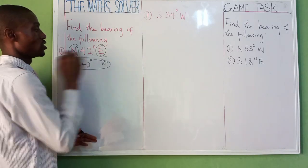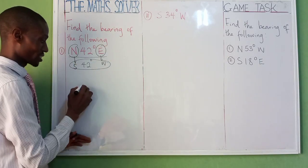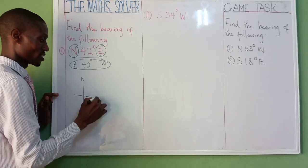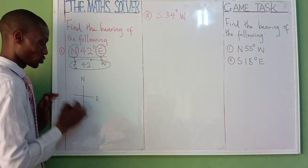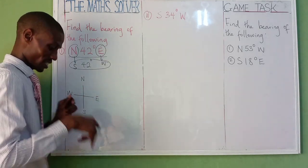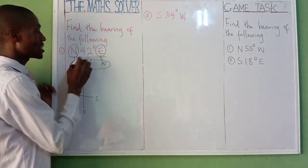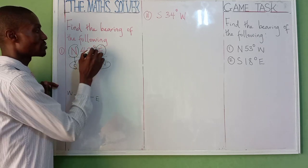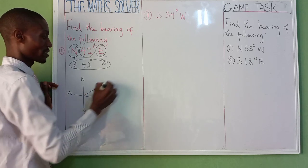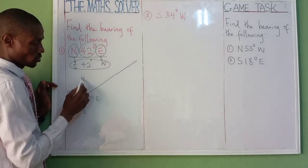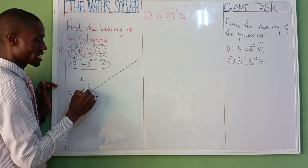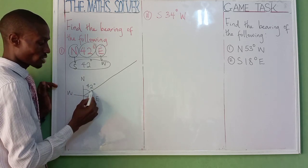Look at our question: north 42 degree east. Let's draw our quadrant. We have north, east, south, west — north here, east here, south down, west here. North 42 degree means 42 is in between north and east.